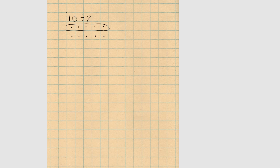Counting by 2's: 4, 6, 8, 10. As we group these together, we see that there are 5 in each group and we've used all 10, so we have no remainders. So our equation is 10 divided by 2 is 5, remainder 0.